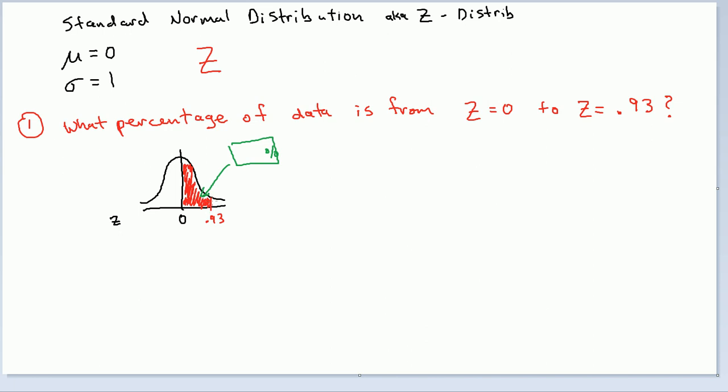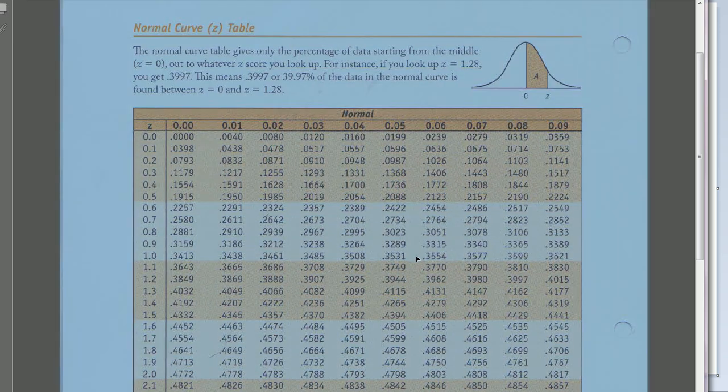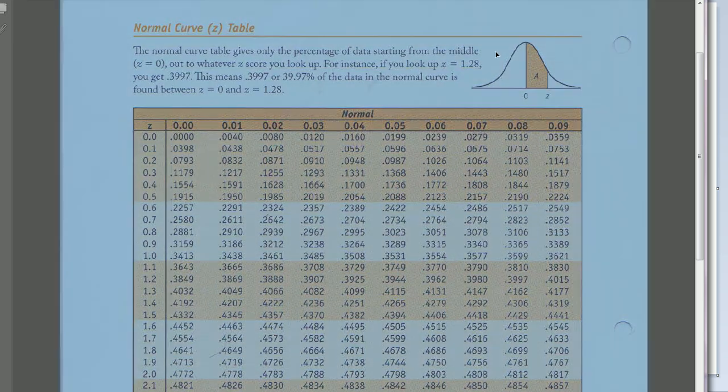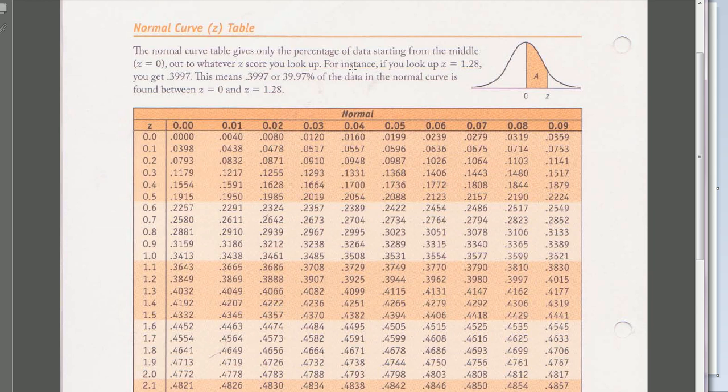So this is converting the wording of the question to a picture. And once you've done this, you start to realize what it is that we actually need to get here. Let me put this in green. That is ultimately what we want. We want to get this percentage. So in order to get anything from here on, we need to consult the table. And as I showed you in the video where I introduced my table, this table that I'm using right here tells me the probability or percentage of data from z equals 0 to z equals the value that you look up.